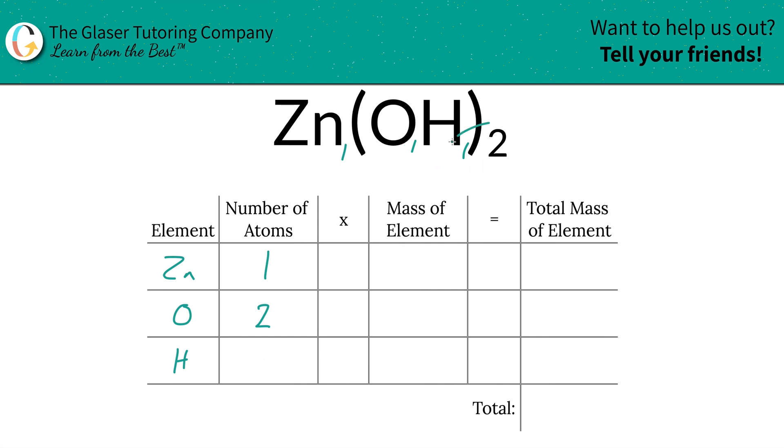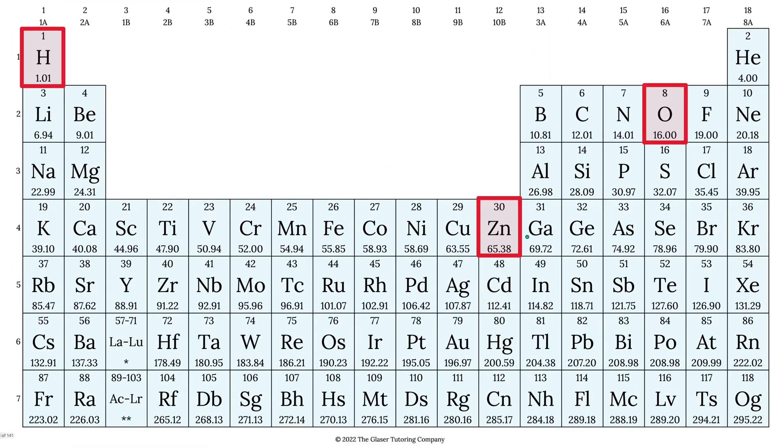Hydrogen, we do the same thing, just multiply those two numbers together, and that would be two. Then we're simply going to take those number of atoms and multiply it by the mass of each element. These masses are always found on the periodic table.